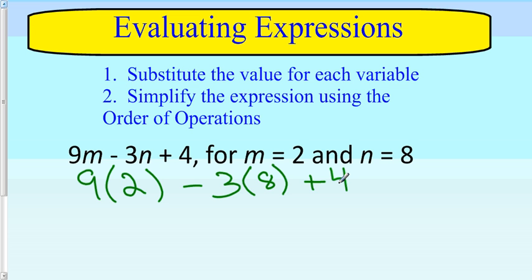Next, I'll follow the order of operations. 9 times 2 is 18 minus 3 times 8, which is 24. Then add 4. 18 minus 24 is negative 6, and negative 6 plus 4 equals negative 2. So I've evaluated the expression and got an answer of negative 2.